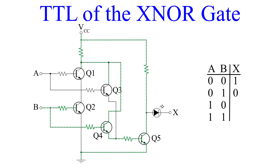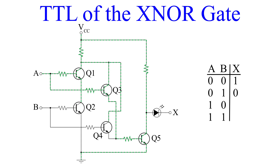Swapping voltages on A and B, we now have A equals 1 and B equals 0. Q1 and Q3 both have base bias. Q1's emitter is connected to Q2's collector, and since Q2 is shut off, no current flows there. Q3's collector has a voltage from VCC, so this transistor is on and allows current to flow to Q5's base. Q5's collector current comes from VCC, and with the base bias, it turns on, shorting the current to ground. The LED remains off, and the output is 0 when A equals 1 and B equals 0.